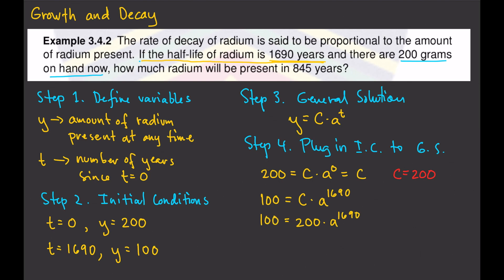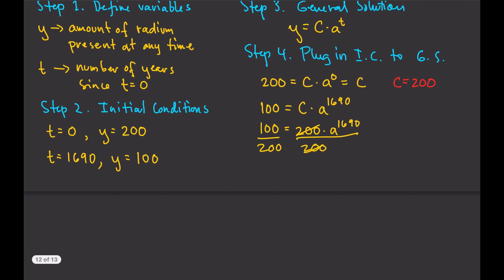Using the second initial condition, when t equals 1,690, y equals 100: so 100 equals 200 times a to the power of 1,690. Dividing both sides by 200 gives one-half equals a to the power of 1,690. Raising both sides to the power of one over 1,690 gives a equals one-half to the power of one over 1,690.